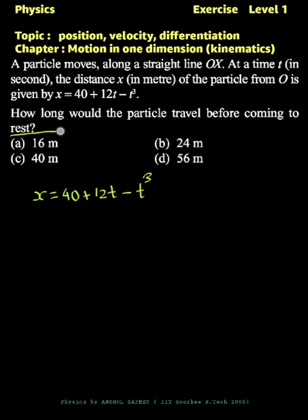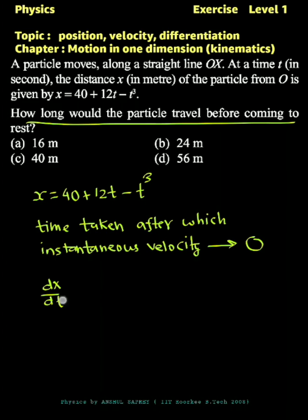That means we have to find out the time taken after which instantaneous velocity becomes zero. Instantaneous velocity is given by dx by dt, so that will be equal to zero plus 12 minus 3t squared.